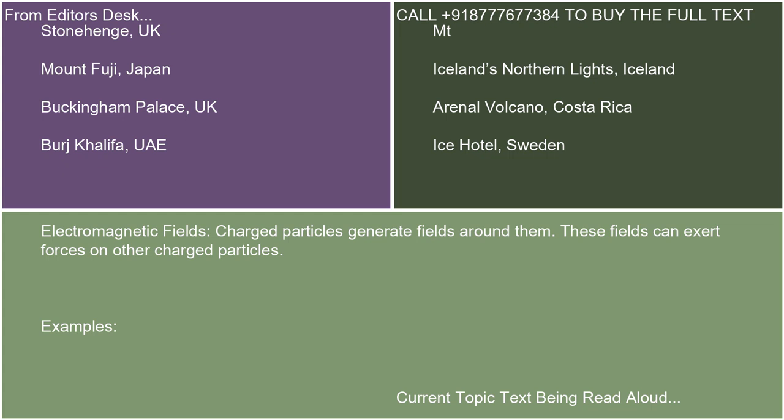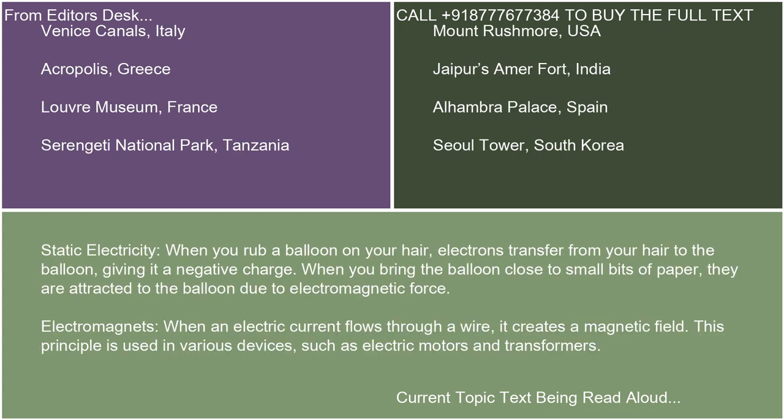Examples. Static electricity: when you rub a balloon on your hair, electrons transfer from your hair to the balloon, giving it a negative charge. When you bring the balloon close to small bits of paper, they are attracted to the balloon due to electromagnetic force. Electromagnets: when an electric current flows through a wire, it creates a magnetic field. This principle is used in various devices, such as electric motors and transformers.